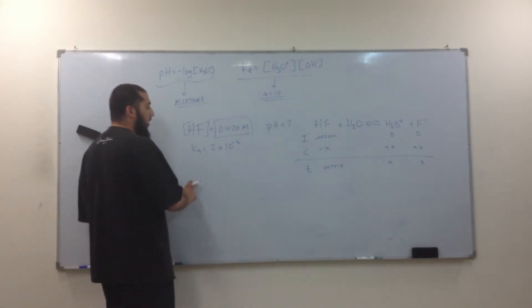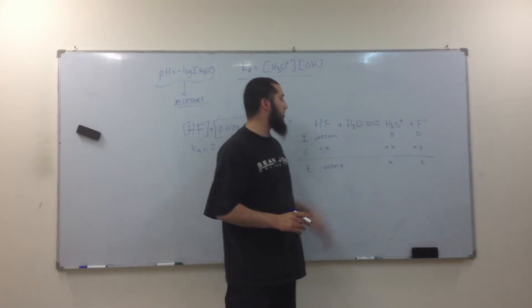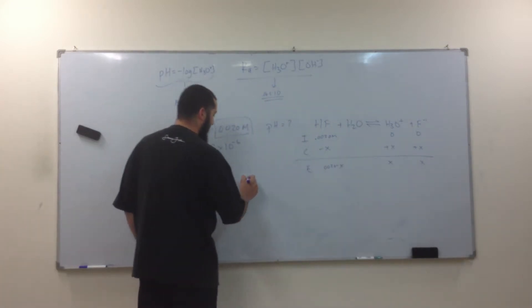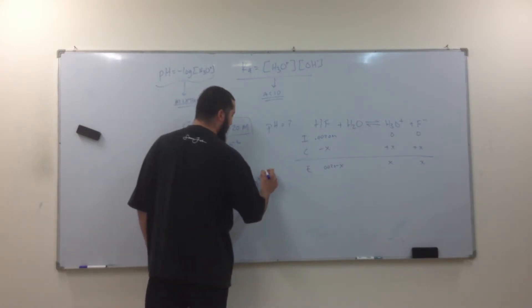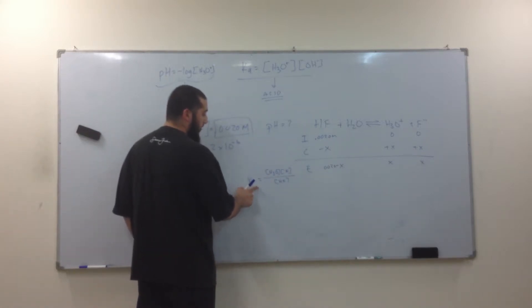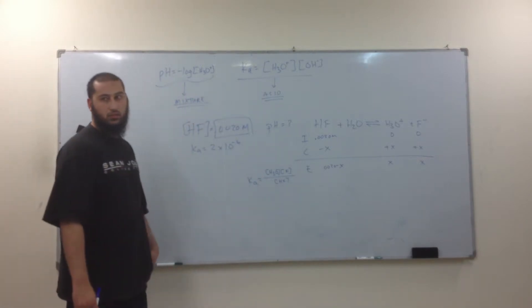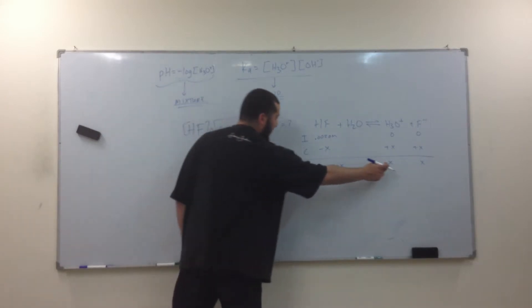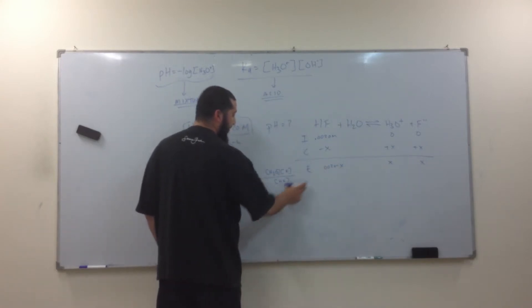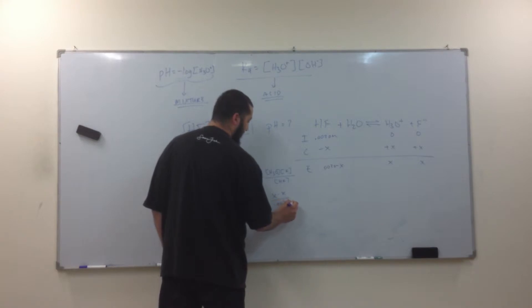What would be the K equilibrium equation of this? So it's going to be the concentration of H3O times the concentration of F, divided by the concentration of HF. Now since this is an acid, we can make this Ka. What's my H3O? X. What's my F? X. What's my HF? 0.0020 minus X.